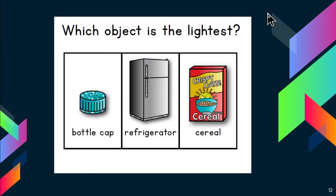Which object is the lightest — a bottle cap, a refrigerator, or a box of cereal? The lightest means the one that weighs the least. That would be the bottle cap.